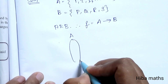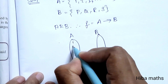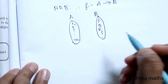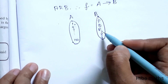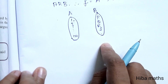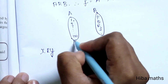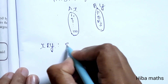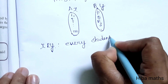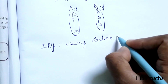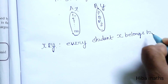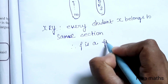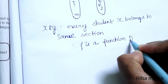Now, we have to explain the arrow diagram. A = {1, 2, 3, ... up to 120} and B = {P, Q, R, S}. Each student X belongs to exactly one section, so this relation is a function from A to B.